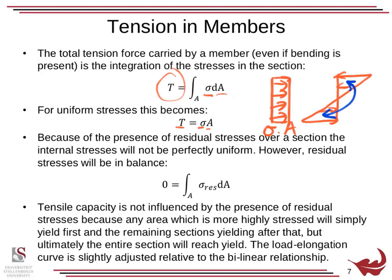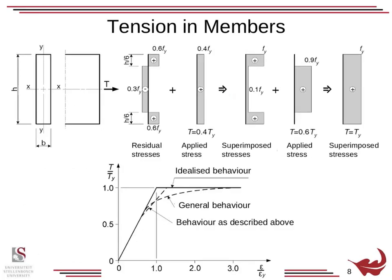Now, tensile capacity is not influenced by the presence of residual stresses because any area which is more highly stressed will simply yield first and then the remaining sections yield after that. But ultimately the entire section will reach yield. The load-elongation curve is slightly adjusted relative to the bilinear relationship. So for instance, what we would have is let's say we've got a rectangular cross-section here, and we put a tension force on it. Initially it's got residual stresses that look like shown here. What we would actually find if we plotted them on this diagram, for instance one is in tension and one is in compression, if we just take these two areas...